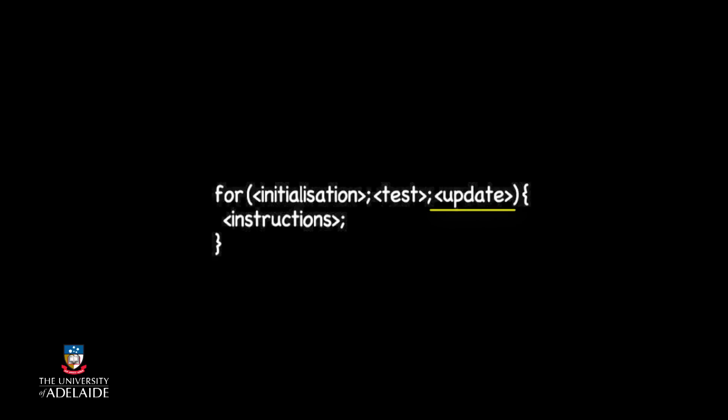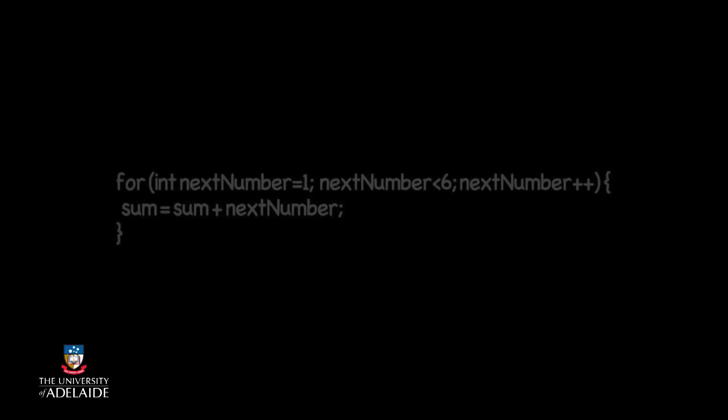The last part, the update, changes the value of the variable declared in the initialization, so that it is now the next number in our sequence. This gets the variable ready for the next repetition of the instructions in our for-loop, which in this case are the instructions to add the value of nextNumber to sum.